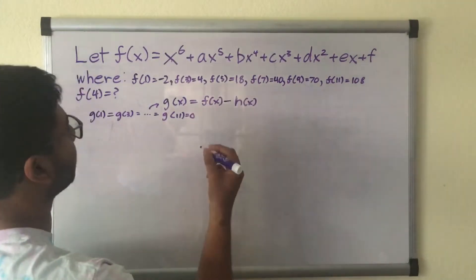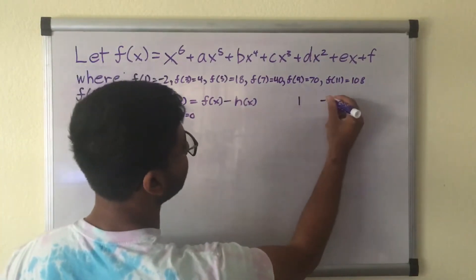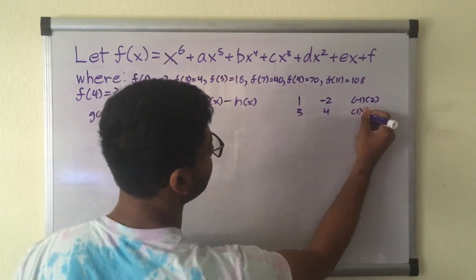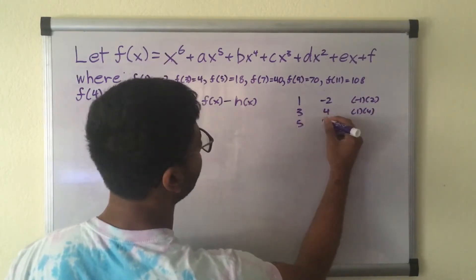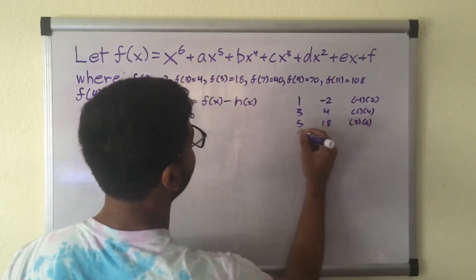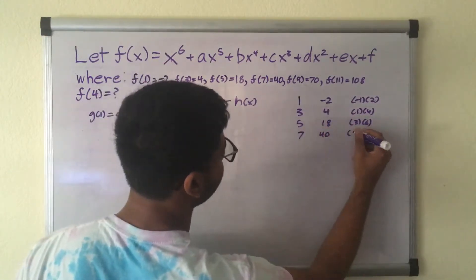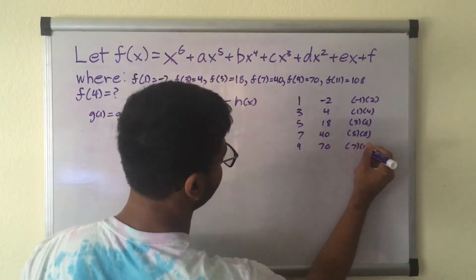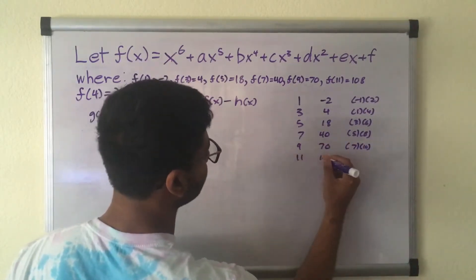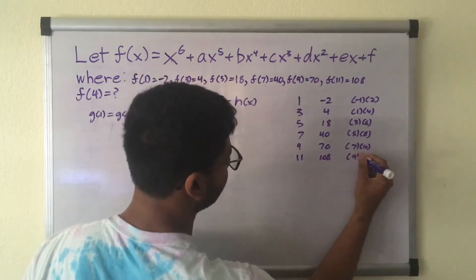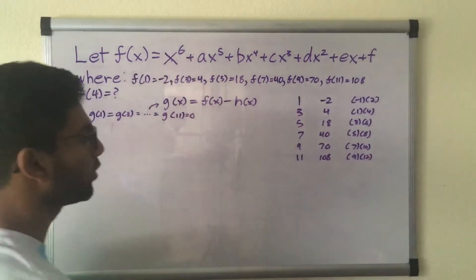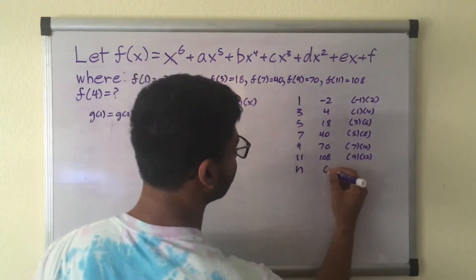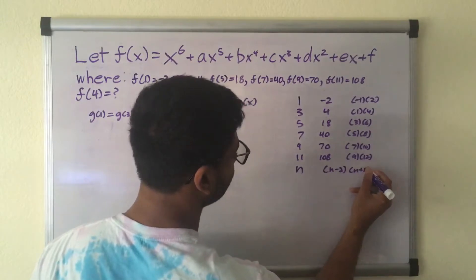So we do need to find a pattern first. So f of 1 is negative 2. This is negative 1 times 2. f of 3 is 4. This is 1 times 4. f of 5 is 18, which is 3 times 6. f of 7 is 40, which is 5 times 8. f of 9 is 70, or 7 times 10. f of 11 is 108, which is 9 times 12. So what we see here is that when we have an n, our output will be in the form n minus 2 times n plus 1.